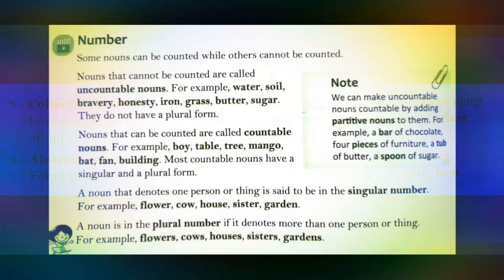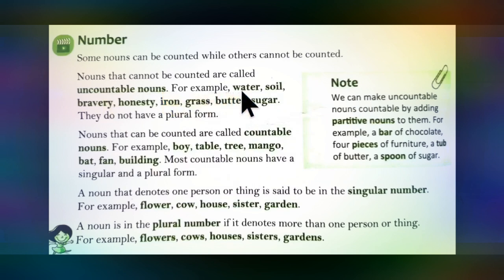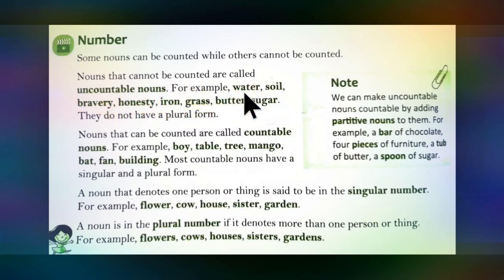Now let's study about number. Some nouns can be counted while others cannot be counted. Nouns that cannot be counted are called uncountable nouns. For example, water is an uncountable noun because you cannot count water — you can count glasses of water, but not water itself. Other examples of uncountable nouns include: soil, bravery, honesty, iron, glass, butter, and sugar. These nouns do not have a plural form.